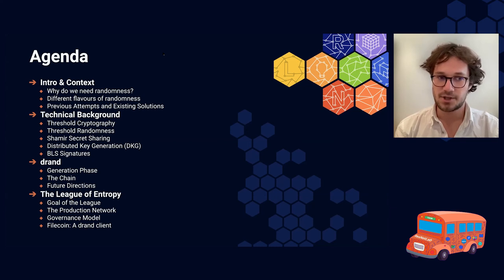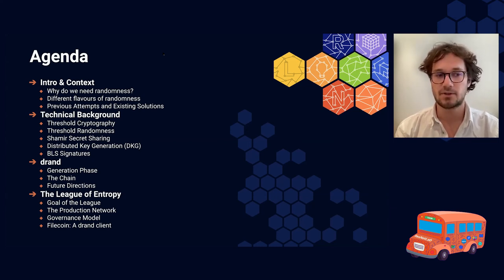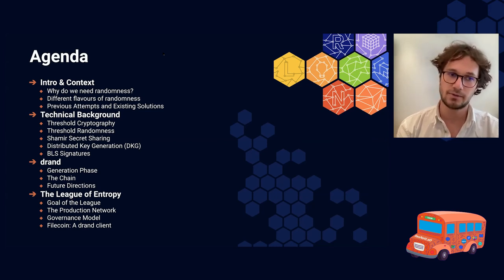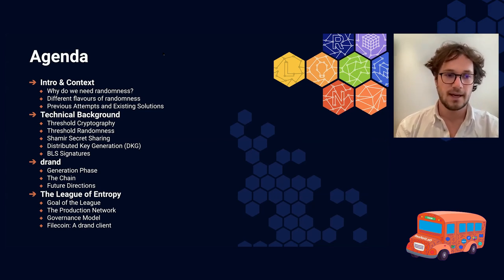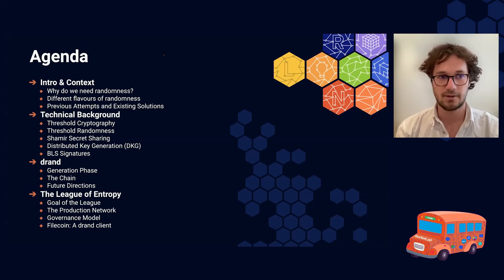We're going to see what is Shamir secret sharing, what is distributed key generation, BLS signatures. Then we're going to talk about DRAND itself, the protocol, how it works, how it uses this cryptography. And then we're going to talk about the League of Entropy, which is a network that runs DRAND right now live on the mainnet.